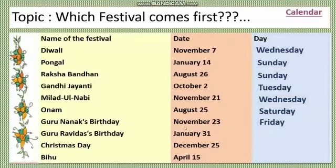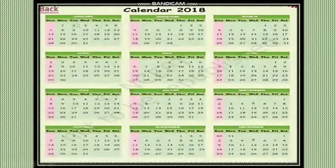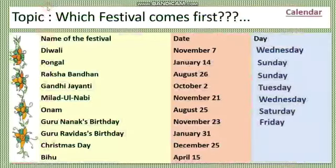Next, Guru Ravidas's birthday is on January 31st. Let's see — January 31st is the last day. Which day is it? Wednesday. So January 31st is Wednesday.